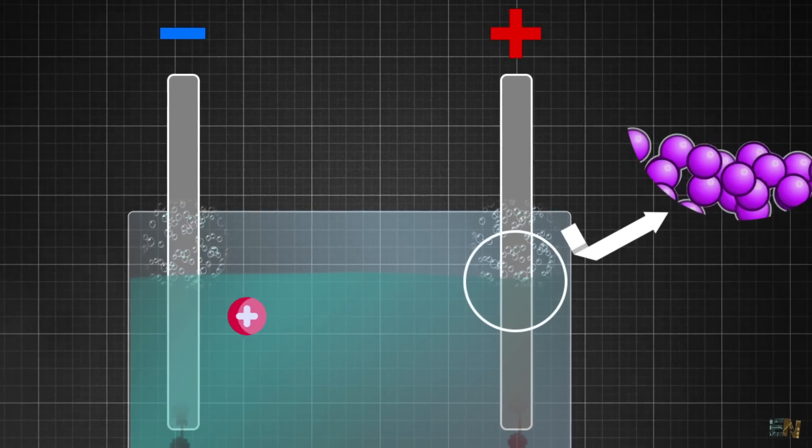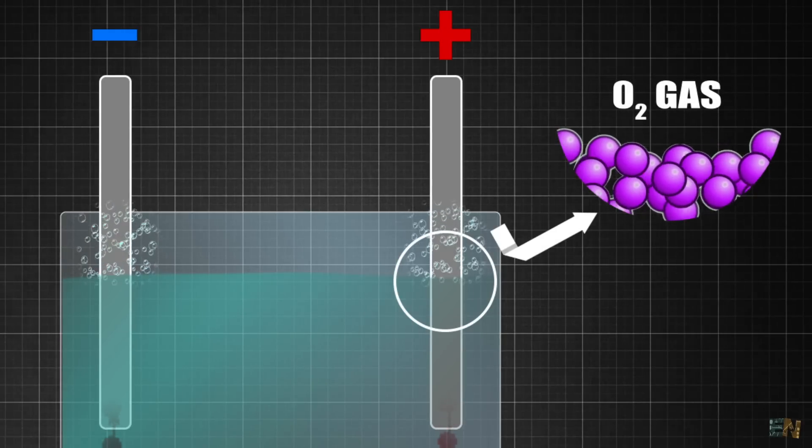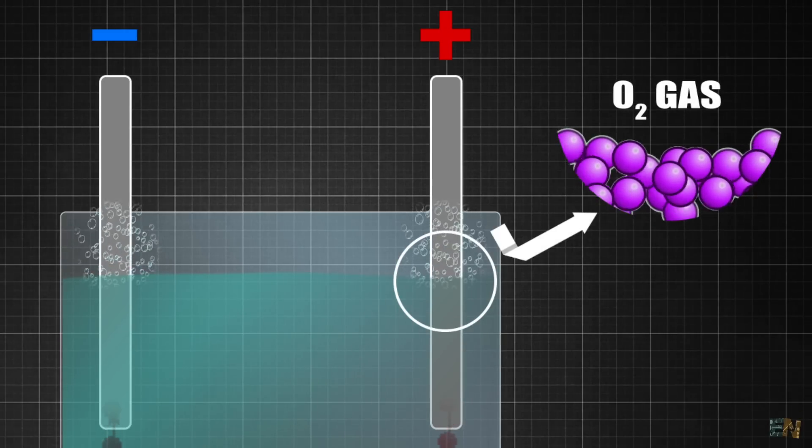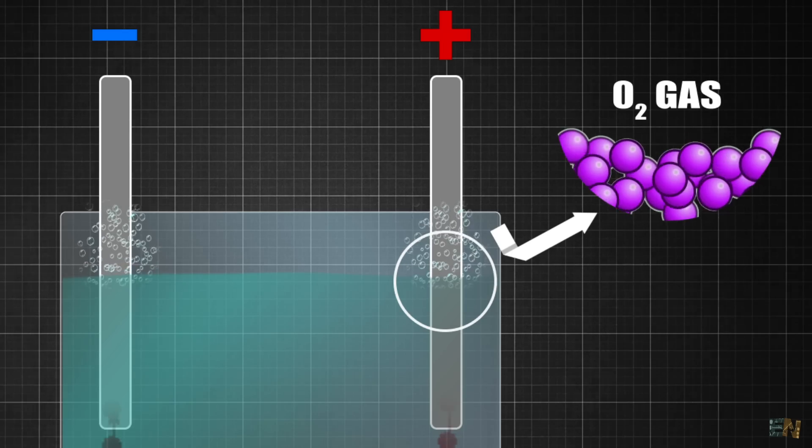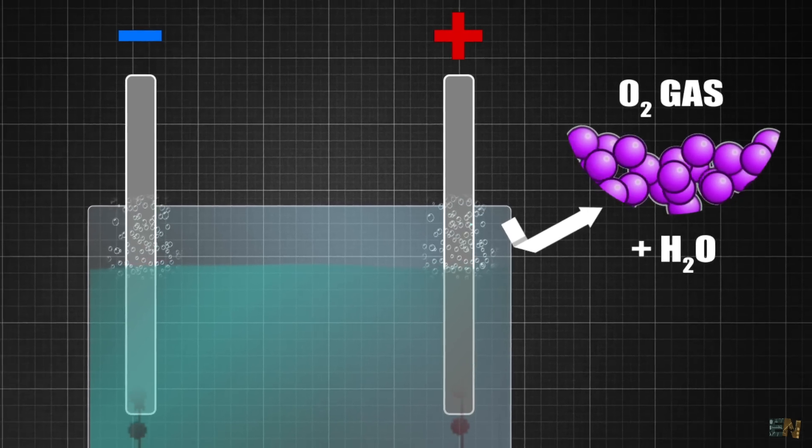And on the other side, at the anode, the hydroxide ions will lose electrons and are oxidized to form oxygen gas, O2, and also water, H2O.